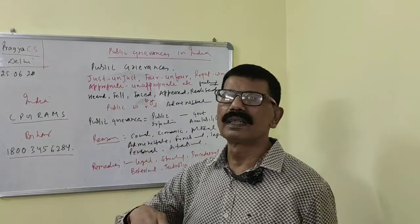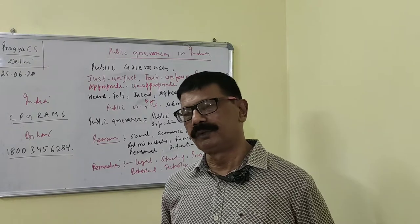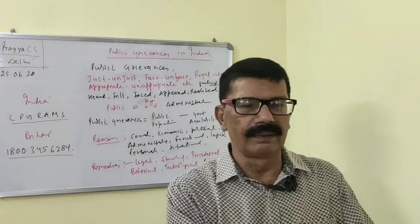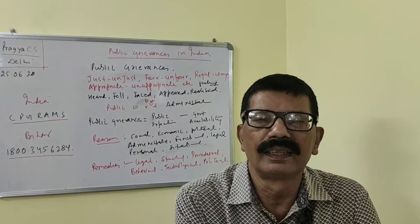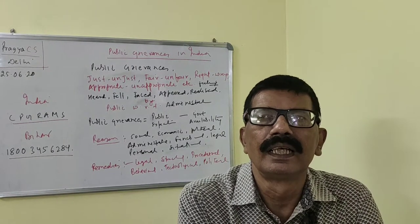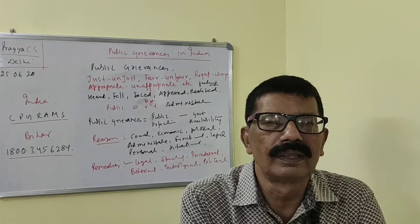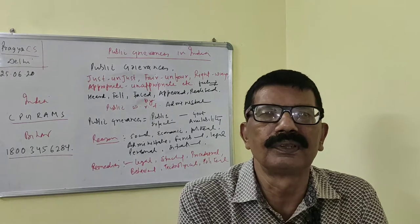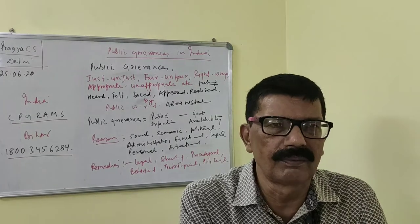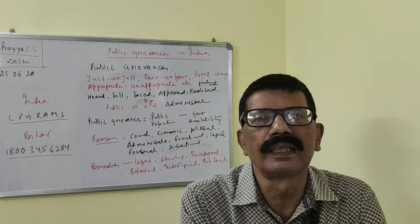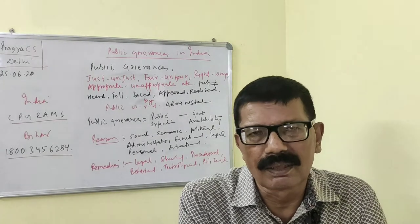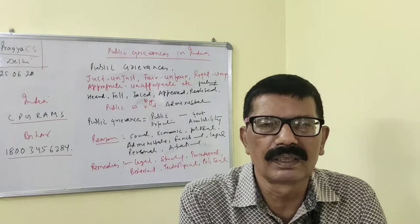What I mean to say is that public grievances may be something you have heard, felt, faced, appeared, or realized — whatever it may be — with regard to administration. It can be unfair, wrong, right — whatever it can be. For example, take NRC or CAA. If you take a survey at India level and try to ask for feedback, a large portion of the population may say it is good and should be continued. But there may be some persons or segments of society who feel otherwise and have grievances with regard to this act. So public grievances is basically a broad concept.